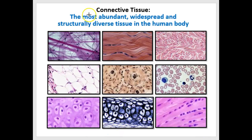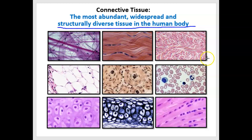So connective tissues are the most abundant and widespread type of tissue in the body. They're also the most structurally diverse tissue types in the body. It's one category, but there's a hodgepodge of things in the category. As you can see from this slide, I've got nine pictures of nine different types of tissue. And in some cases, you can make out cells pretty easily. Like on the lower left there's a cell, on the lower right there's a cell. Of course, we did blood already, and we've done loose connective tissue.